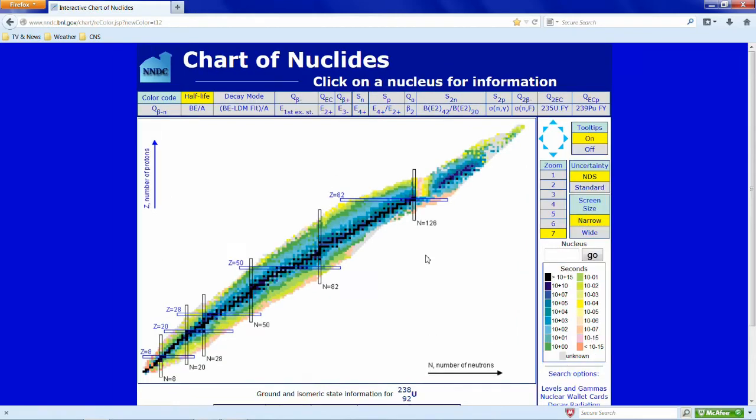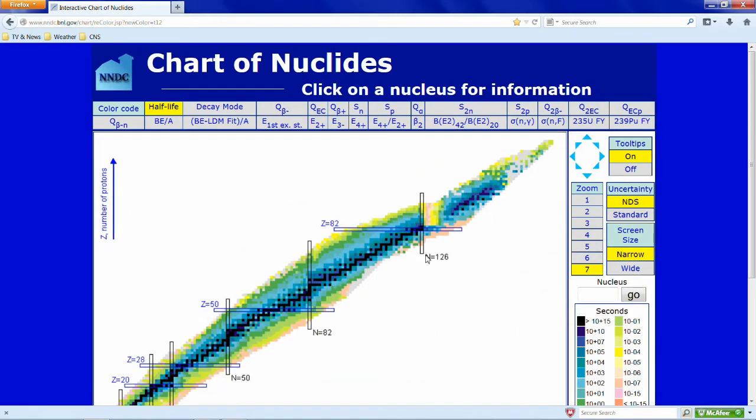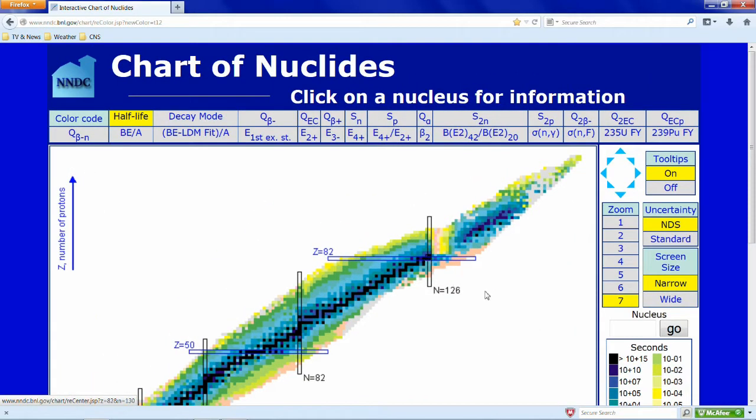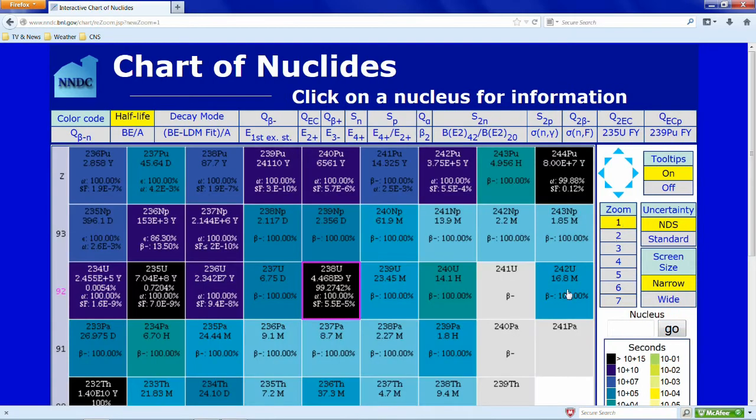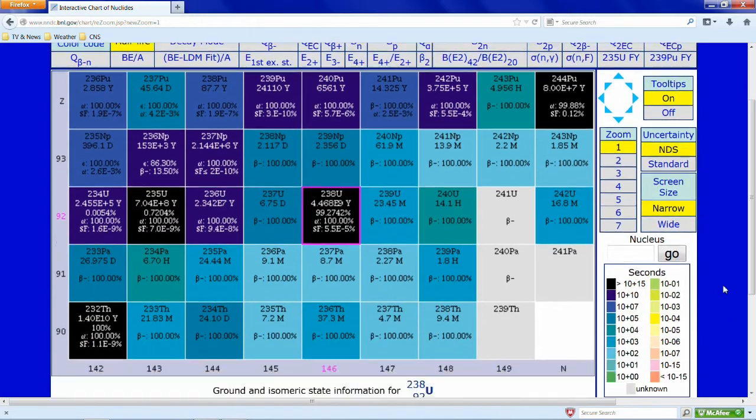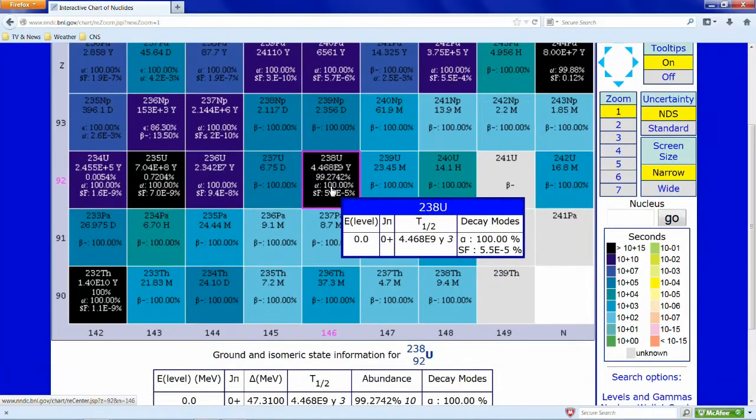The interactive chart of the nuclides is the source of the data we need to examine the physics of our balloon experiment. We enter U-238 in the nucleus box and click on Go. We then select Zoom Level 1. Uranium-238 is highlighted.